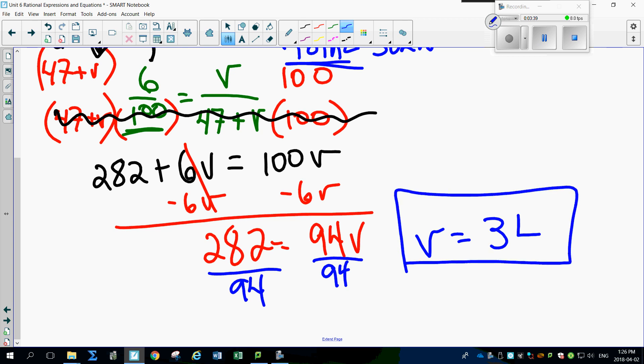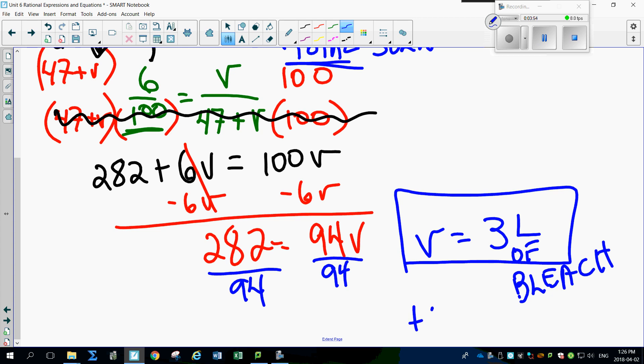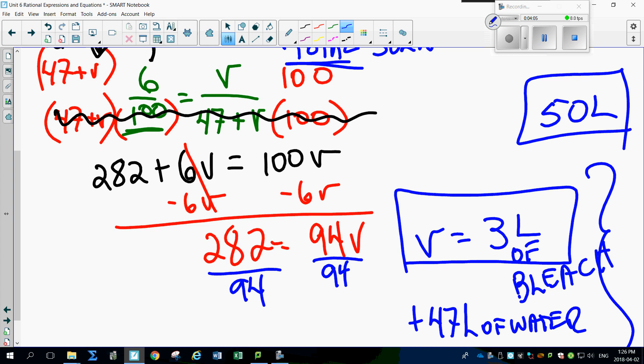So guess what? You need 3 liters of bleach along with the 47 liters of water, so you're really diluting this. That's going to give you a total solution here of 50 liters of commercial bleach that you will sell to the consumer. That's how these bleach questions work. Set it up as a ratio.